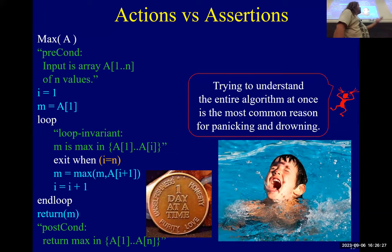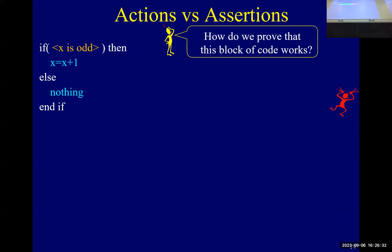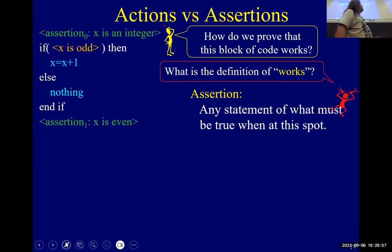Here's a block of code, and we're going to work on understanding it. These are actions — statements — but instead I'm thinking about what we're going to do and how. What's the definition of 'works'? We'll put some assertions. Assertions are a picture: it's a place in the code where we pause and the assertion states something true about your data structure. After assertion zero, the assertion is simply that x is an integer. At the bottom, the assertion is simply that x is even. That's a kind of picture — no action, just a statement.